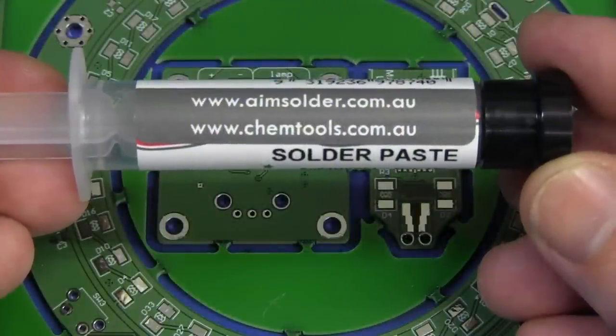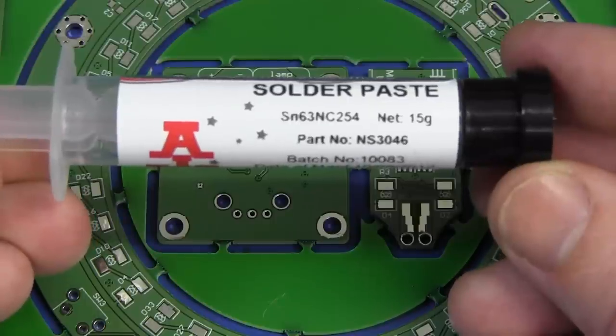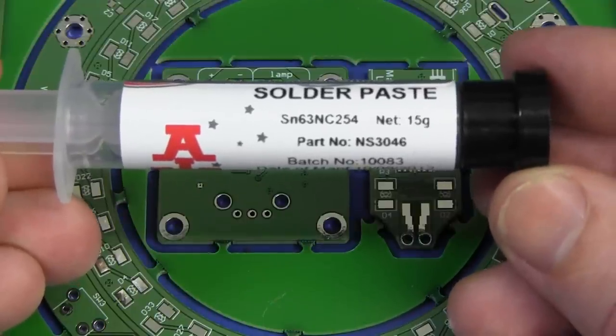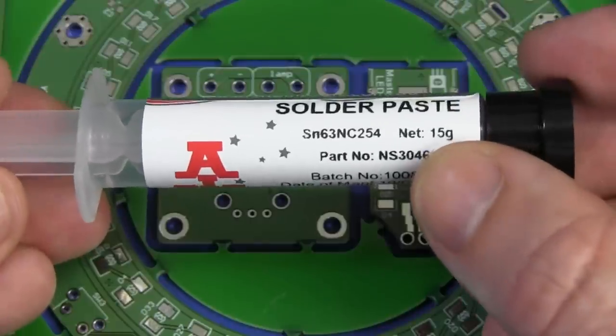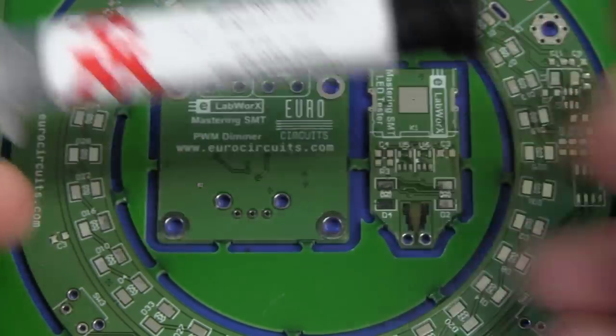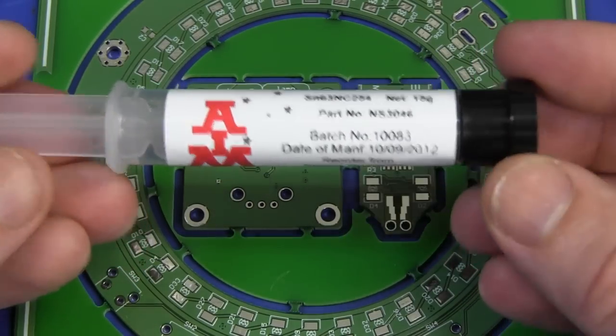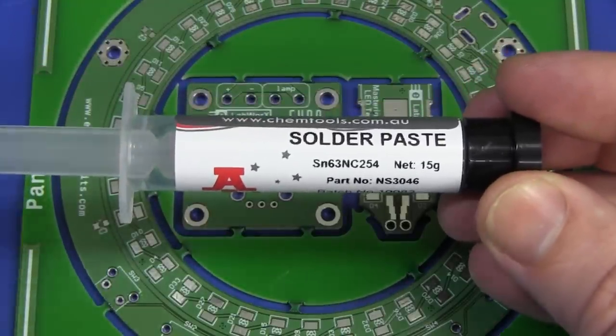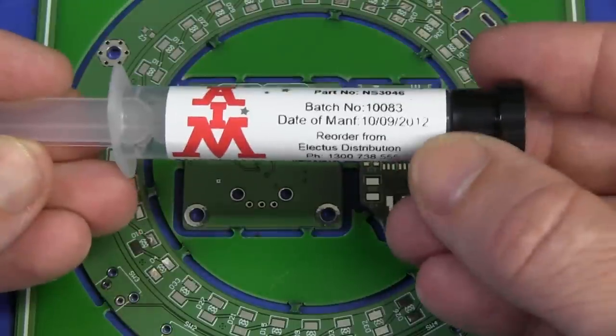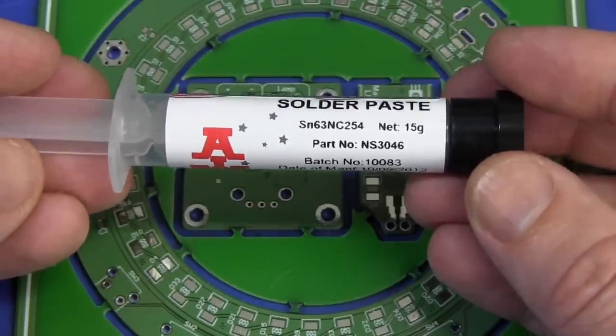And the solder paste I'm going to use today comes from Chem Tools or AIM solder here in Australia, and it's SN63, which stands for 63% tin and 37% lead. So it's quite close to your regular 60-40 leaded solder. So this is not lead-free solder. It's only 15 grams, which doesn't sound like a lot, but you don't need much solder paste to do one of these stencils on a fairly typical board like this. So this one has been manufactured fairly recently. Now, the solder paste has a couple of issues. The first one is that it does have a shelf life. If you try and use it beyond that, its performance is not guaranteed. This one might have six months, and if you use it in 12 months time, it's probably still going to work, but the performance is not guaranteed at all.